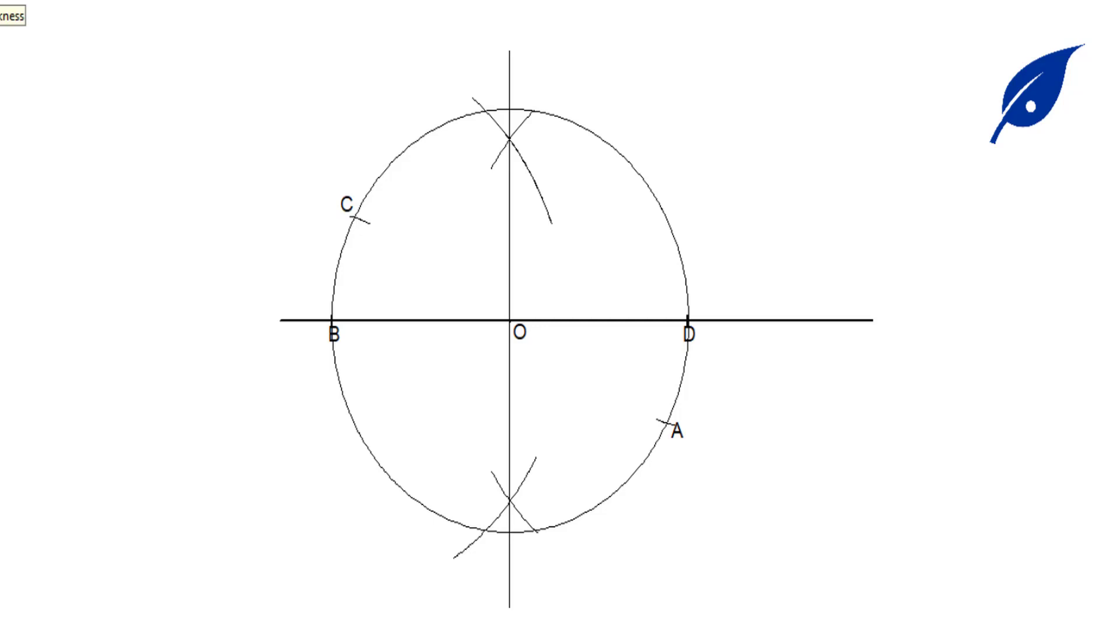Now connect B to C and D to A, which is the required side, the given side. Then when we connect B to A and C to D, it will now be the required length of the rectangle.